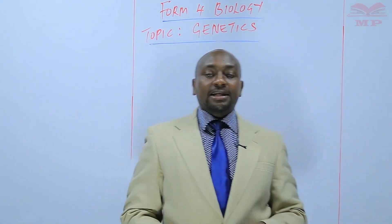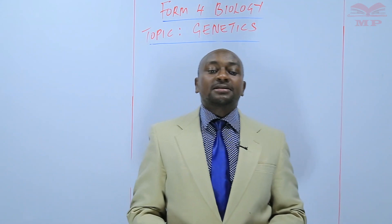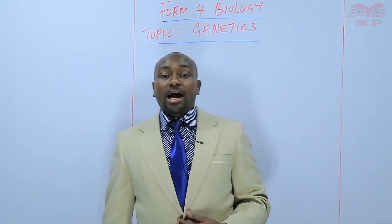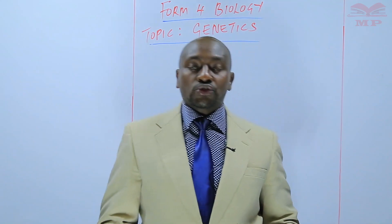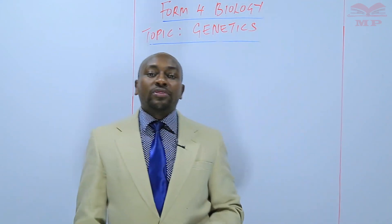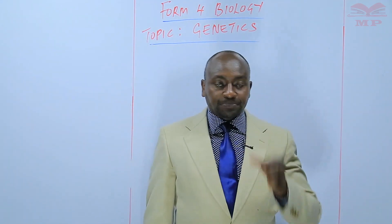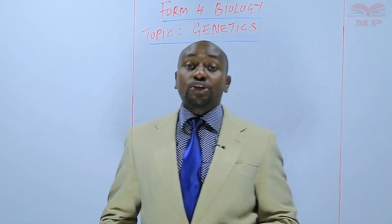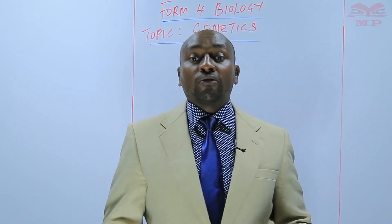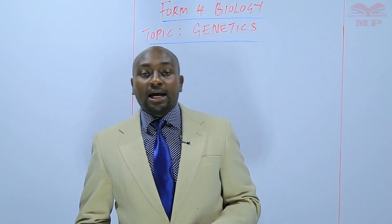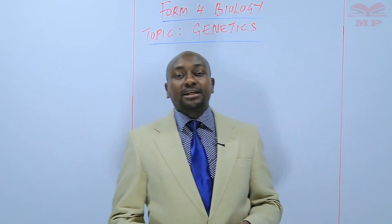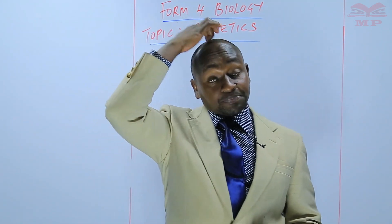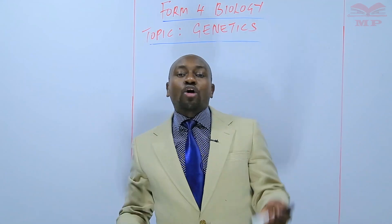During the last lesson, we discussed the chromosome. We said that a chromosome is a thread-like structure located within the nucleus of a cell, and that chromosome contains genetic material that is in the form of DNA. And that DNA is the one that determines the characteristics of an organism.